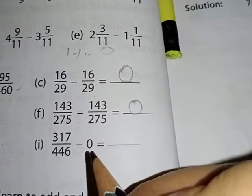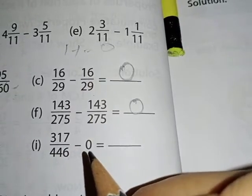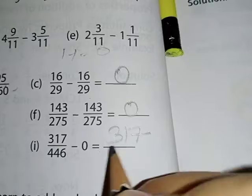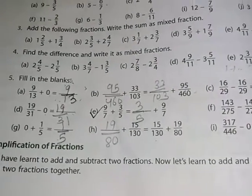Then here, 317 upon 446 minus 0. Minus 0 means we subtract nothing from this, so that same number will be our answer. Clear. So here we have completed question number 5 also.